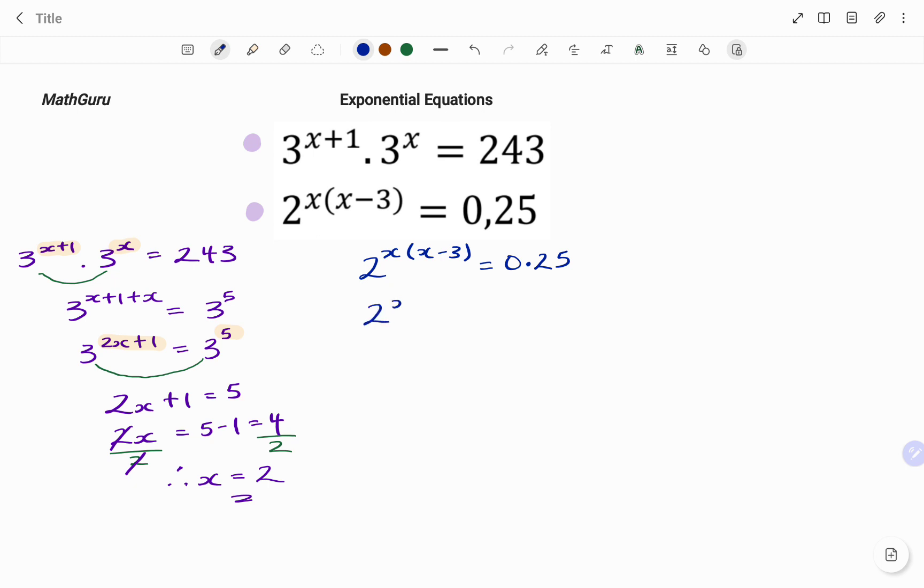So I have 2 to the power of x, bracket, x minus 3, equals, changing 0.25 to fraction will give me 25 over 100.